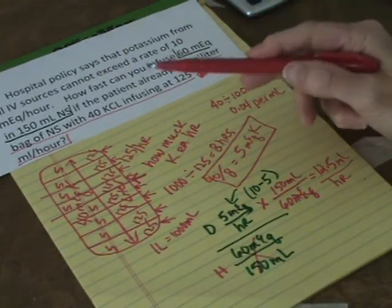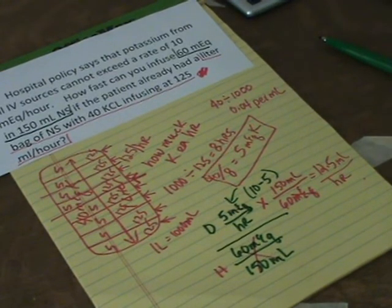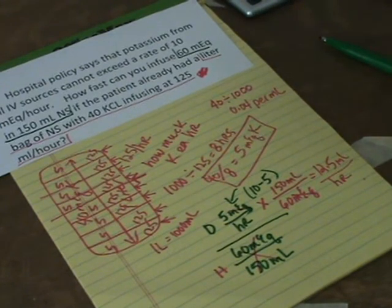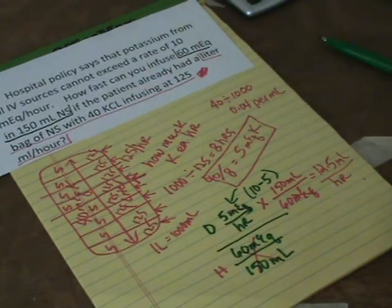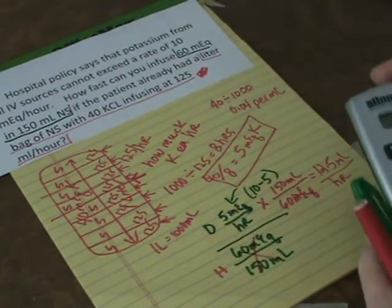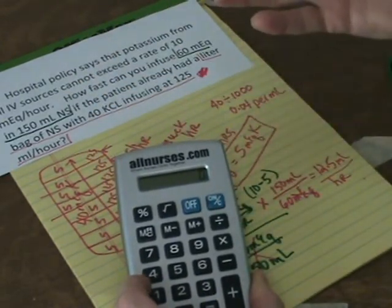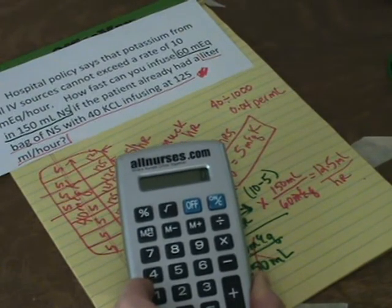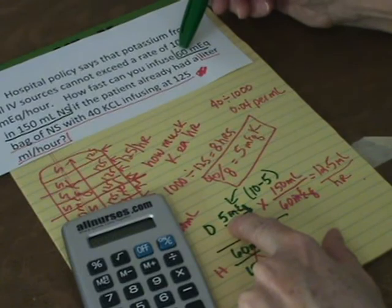Okay? So, 60 milliequivalents in 150 mils can run at 12.5 mils an hour. That combined with the continuous infusion at 125 an hour will give the patient a total of 10 milliequivalents per hour. Now, how long will this little rider last? Well, if you're running it at 12.5 mils an hour and you have a 150 mil bag, the answer is 12. Okay? But I'll show you. And the reason I looked at that very quickly and could tell is because I know I'm running at 5 milliequivalents an hour. So, at 5 milliequivalents an hour, 60 milliequivalents should take 12 hours.